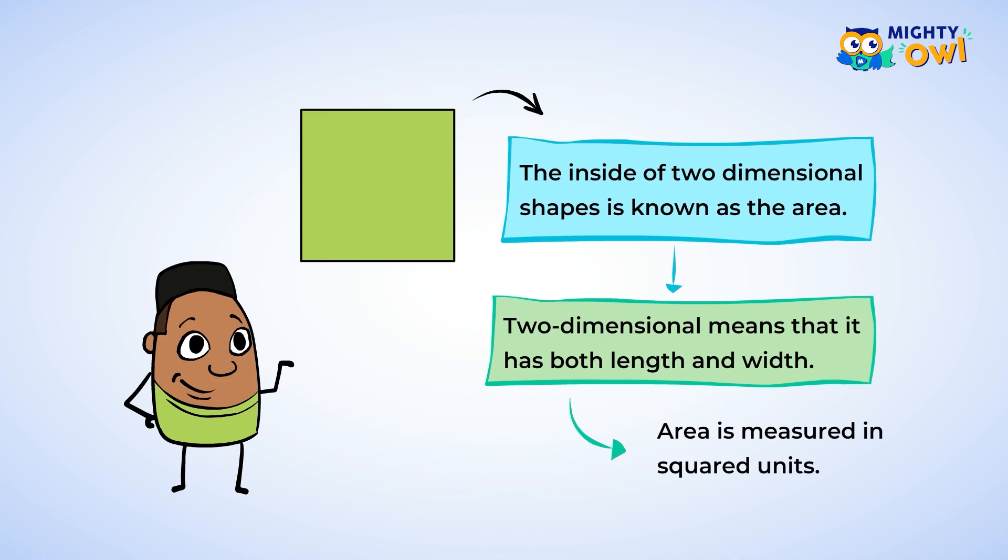For example, take a look at this square. It has a length of one unit and a width of one unit. This is called a unit square, and it has one square unit of area.